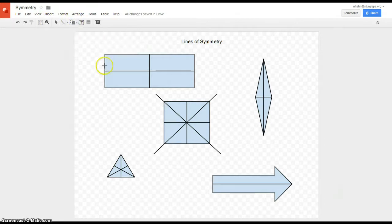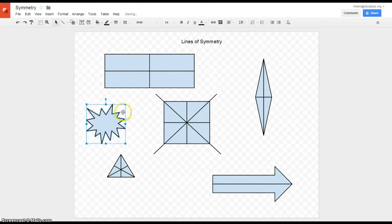This kind of explosion-looking shape. This does not have a line of symmetry. Nowhere on here, if you fold it, it won't be exactly the same on the other side. So this would be an example of a shape that does not have a line of symmetry.